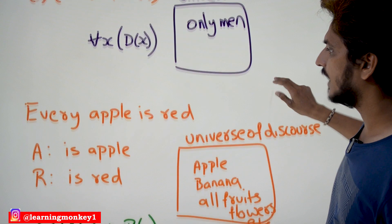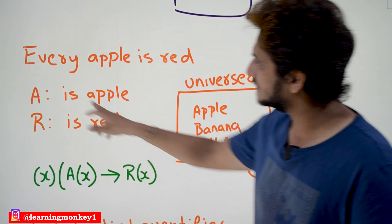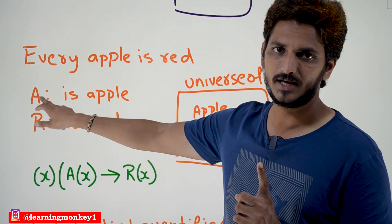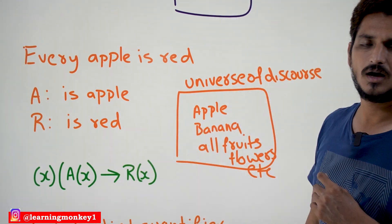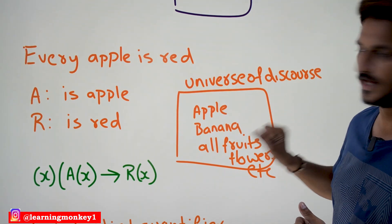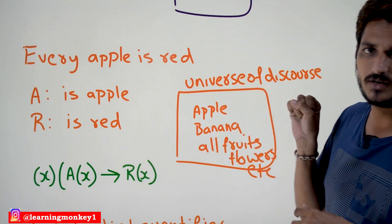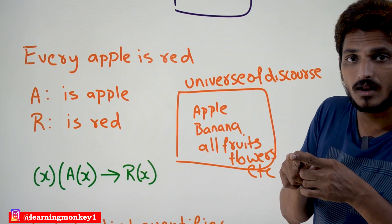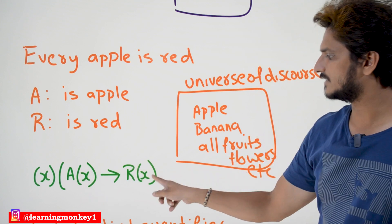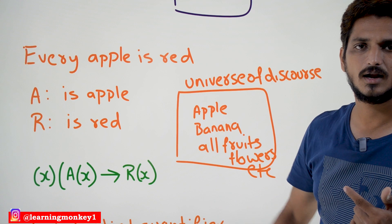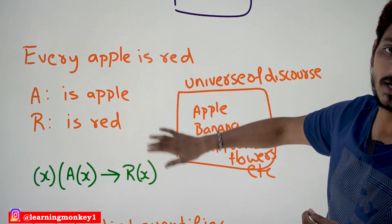Let's write one more example: 'every apple is red in color.' This is separated into two predicates — 'is apple' is one predicate, 'is red' is the second predicate. Our universe of discourse contains apple, banana, all fruits, flowers, everything. If you pick one thing from this, if it is an apple — for all x, if x is an apple then x is in red color. That is how we write the statement for universal quantifier.